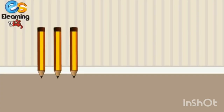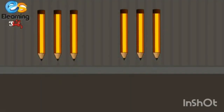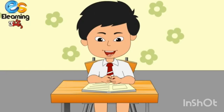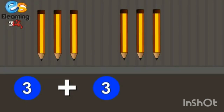Three pencils and three more pencils. How many pencils, children? One, two, three, four, five, six. Three pencils and three pencils — six pencils. Very good. Three plus three is equal to six.